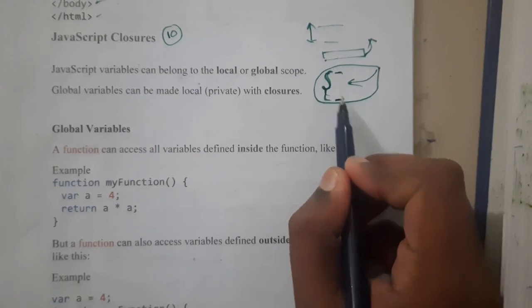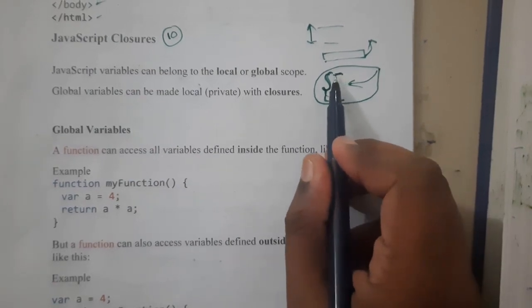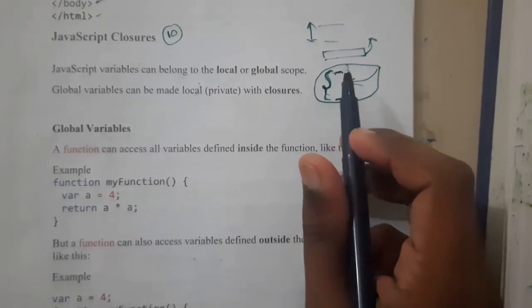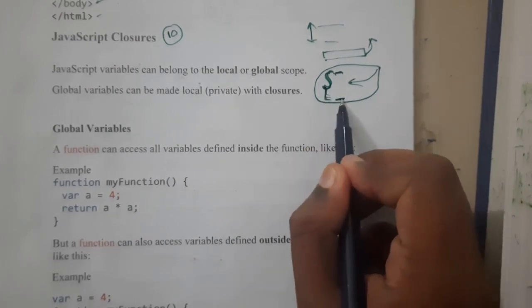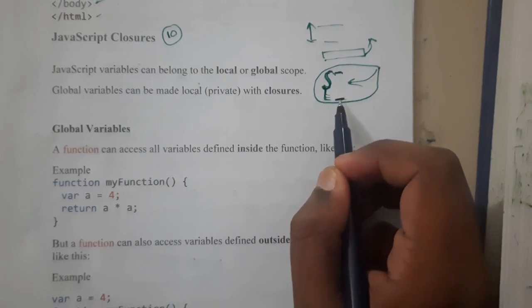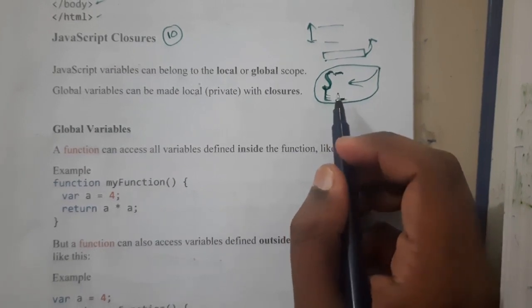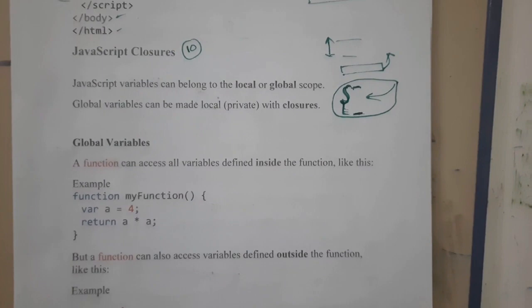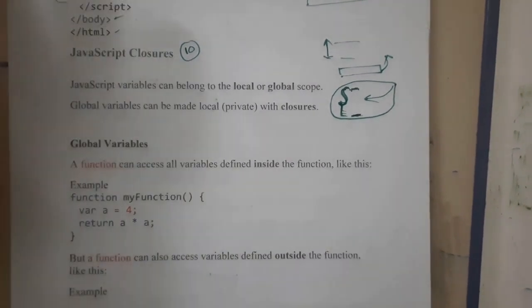Once the function execution is done and there is no need of that function anymore, it will automatically be deleted. That is the concept of JavaScript variables. Even in JavaScript, we have the same concept of local and global variables.